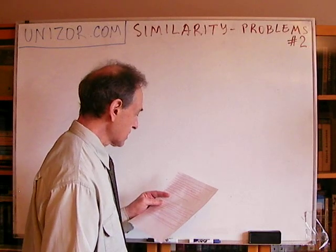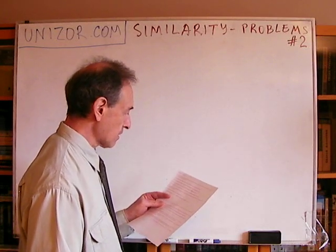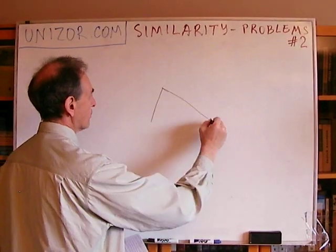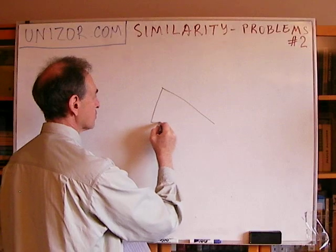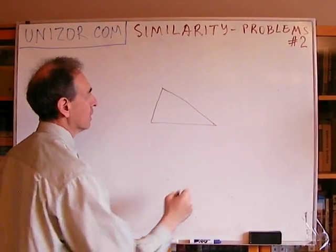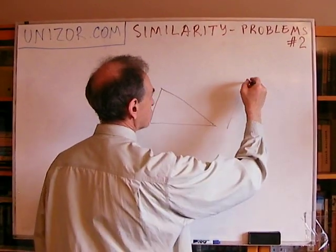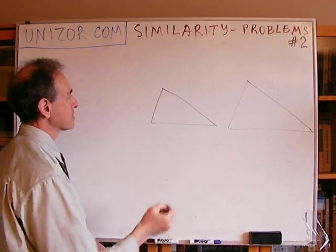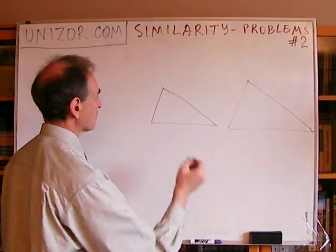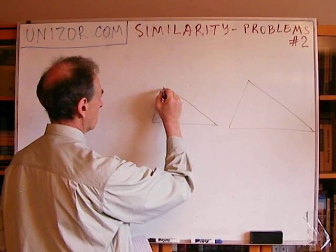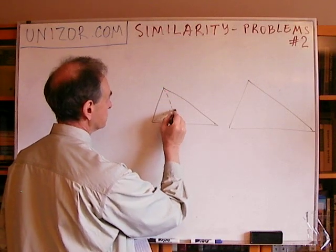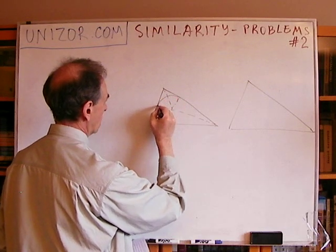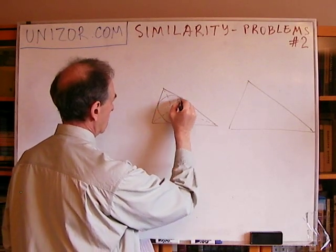Prove that similar triangles have radii of inscribed circles proportional to their sides. It's kind of obvious, I guess, but even obvious things need to be proved. So you have two triangles which are similar to each other. Now you have inscribed circles. If you remember, the inscribed circle is at the crossing of angle bisectors. And here you have an inscribed circle, and the same thing in the other triangle.